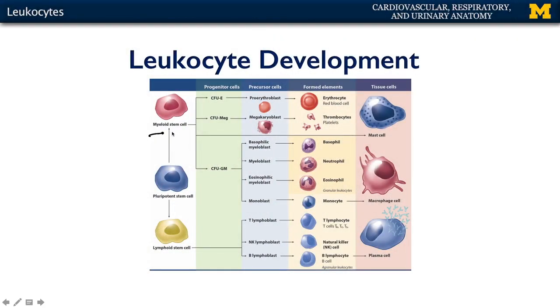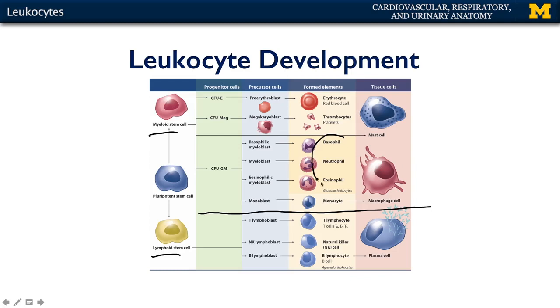There are two major types of blood stem cell: myeloid stem cell and lymphoid stem cell. Not all leukocytes are derived from one or the other — they're actually derived from both. Our granular leukocytes and monocytes are derived from myeloid stem cells, whereas our lymphocytes are derived from lymphoid stem cells.